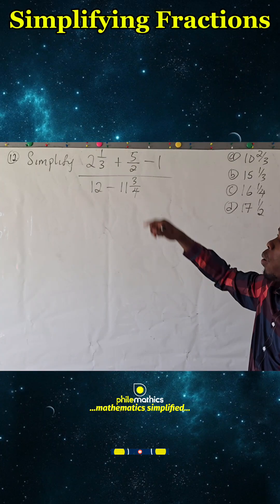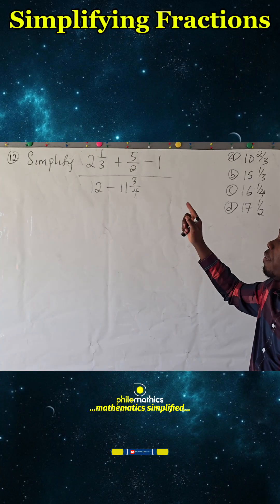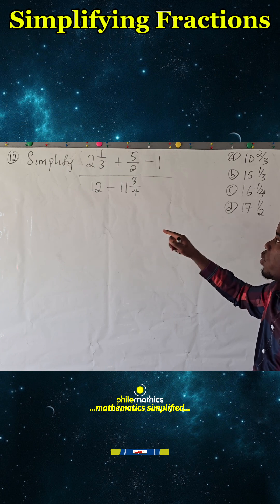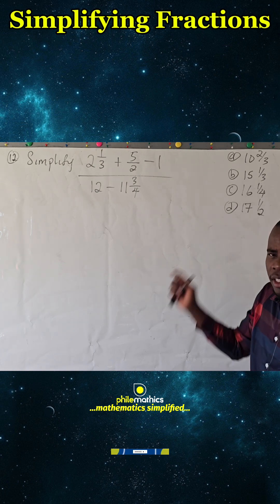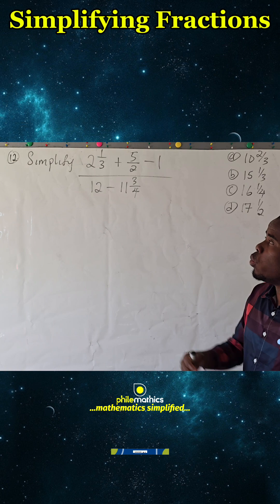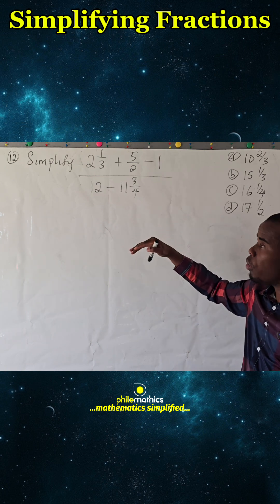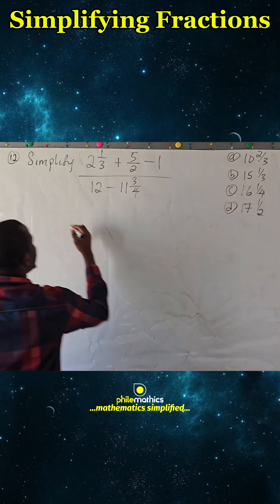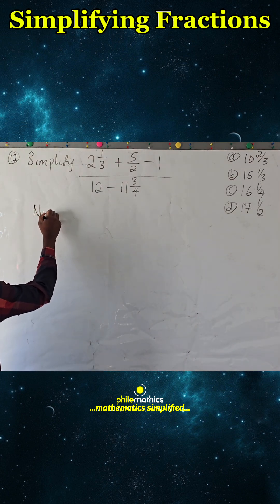Simplify 2 1/3 + 5/2 - 1/12 all divided by 12 - 11 3/4. So you want to simplify the numerator, simplify the denominator, and then divide. For the numerator we have...